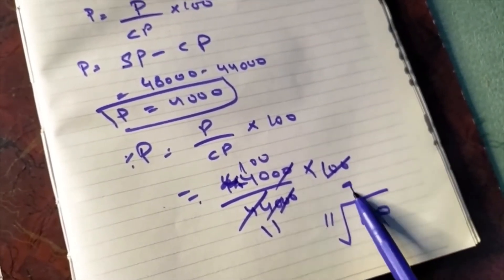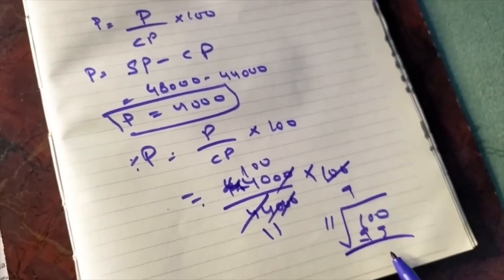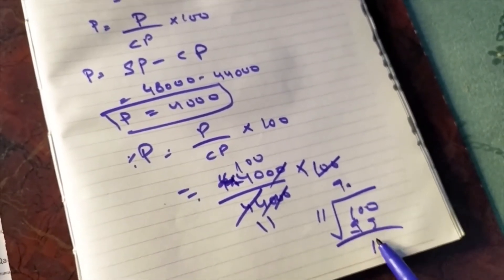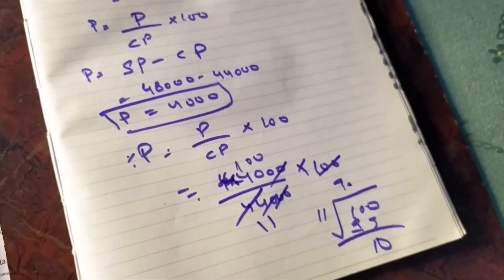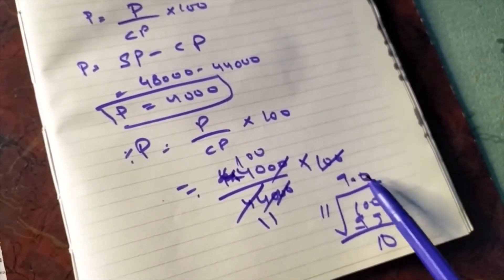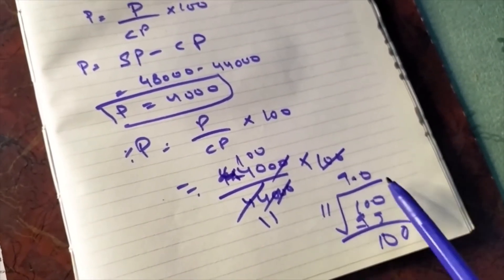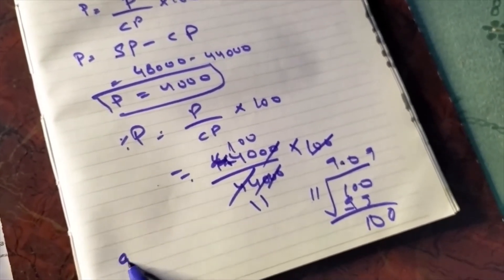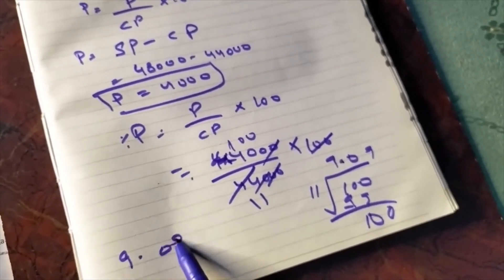11 times 9 is 99, so 100 minus 99 leaves 1. Then we add a decimal and a zero. 11 doesn't go into 10, so we add another zero. Again, 11 times 9 is 99. This series continues, so the profit is 9.09%.